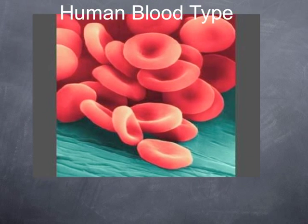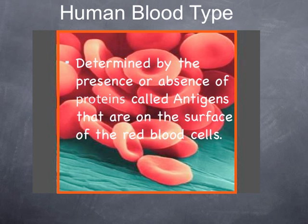Your blood type is determined by the presence or absence of proteins on the surface of the red blood cells. Those proteins are called antigens. The possible blood types are blood type A — A antigen; blood type B — B antigens; blood type AB, which means you have both A and B antigens; and blood type O, where a person has no antigens on the red blood cells.